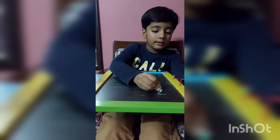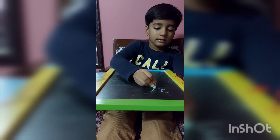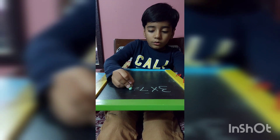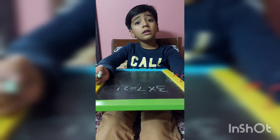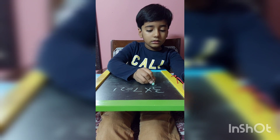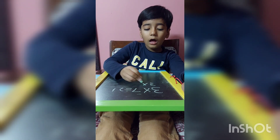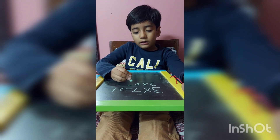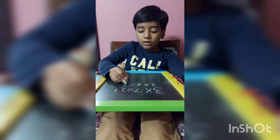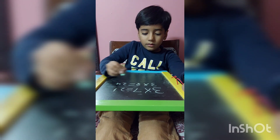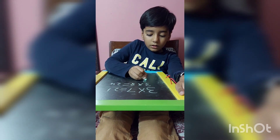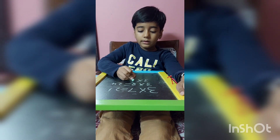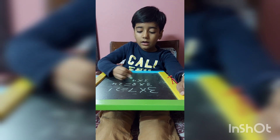Three sevens — twenty-one. Three eights — twenty-four. Three nines — twenty-seven.